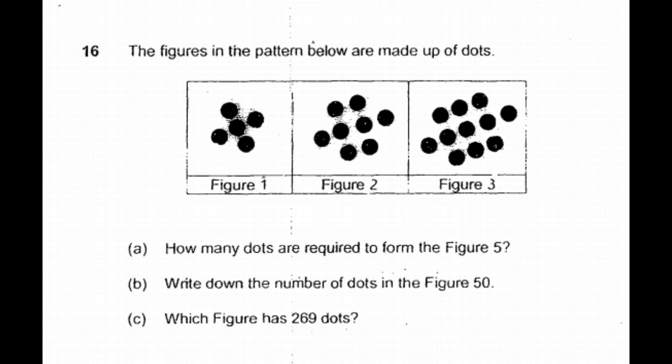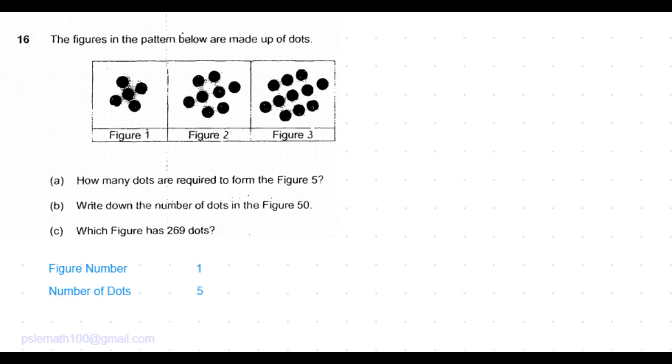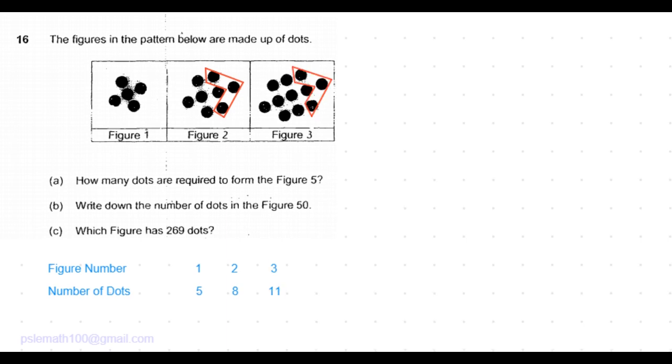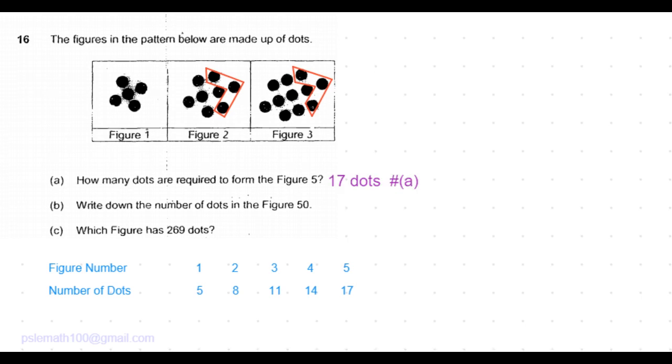Part A of the question is: how many dots are required to form figure 5? Let's draw a chart of figure number and number of dots. We see that figure 1 has 5 dots. Figure 2 has 3 more dots, which is 8 dots, and figure 3 has 3 more dots, that's 11 dots. So figure 4 would have 11 plus 3, 14 dots, and figure 5 would have 14 plus 3, 17 dots. So that answers the first part of the question.